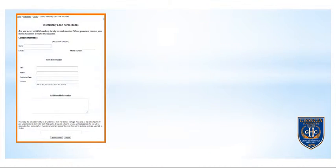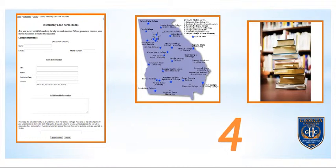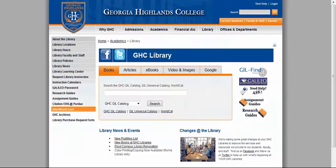For question number three, you have to locate the interlibrary loan form, which allows you to request books from outside of the University System of Georgia library system. Then you have to give four things that you have to supply to the library staff in order to order this book.